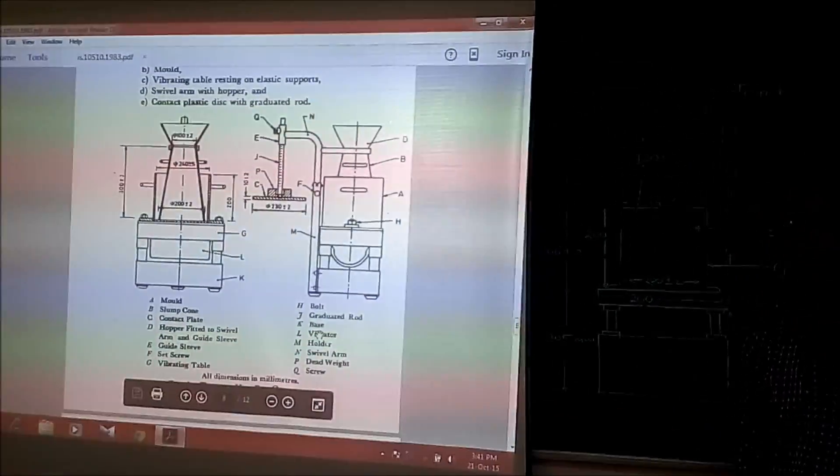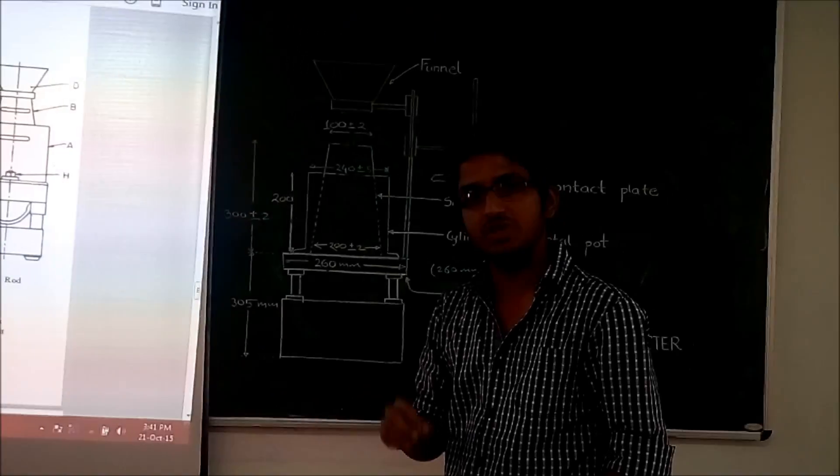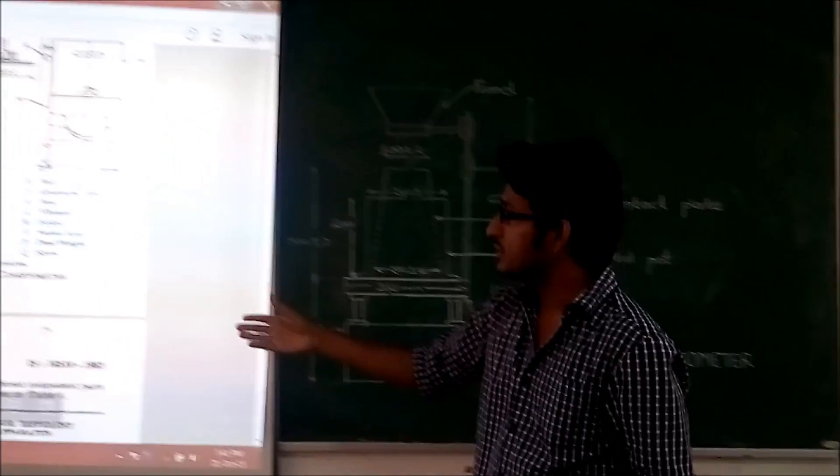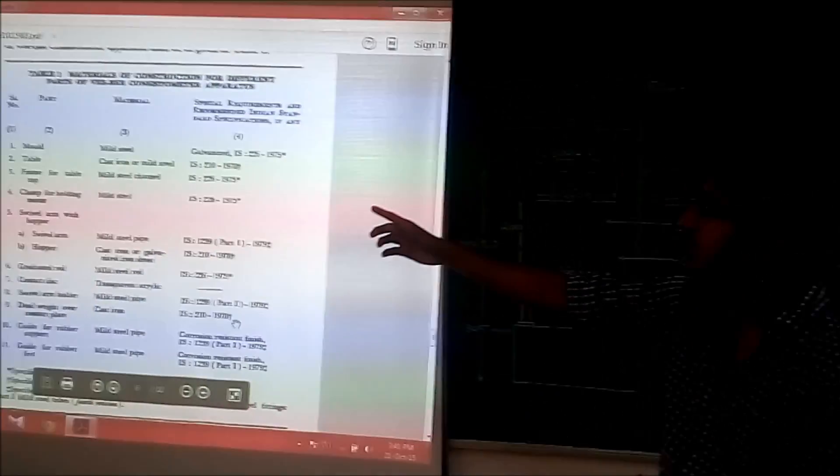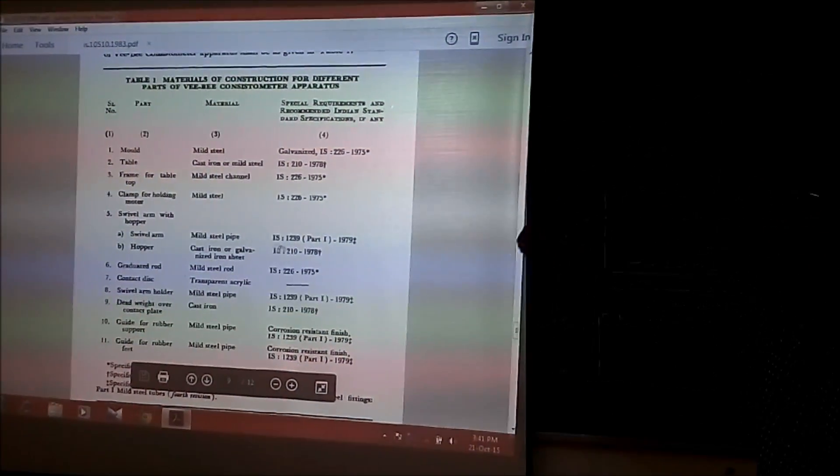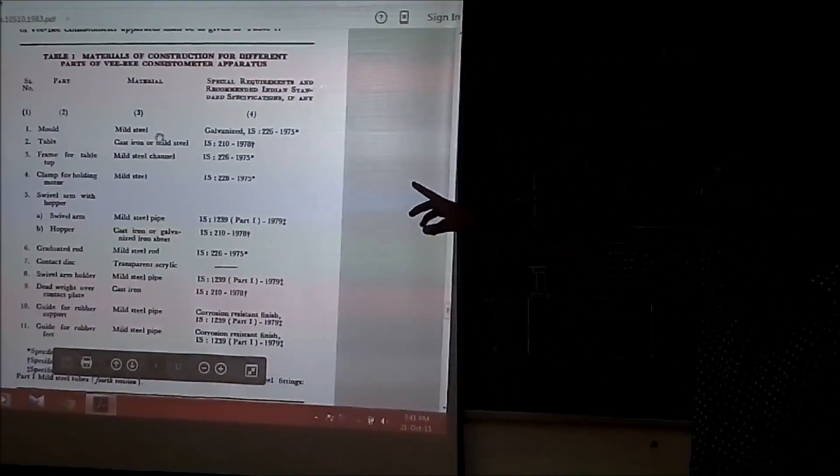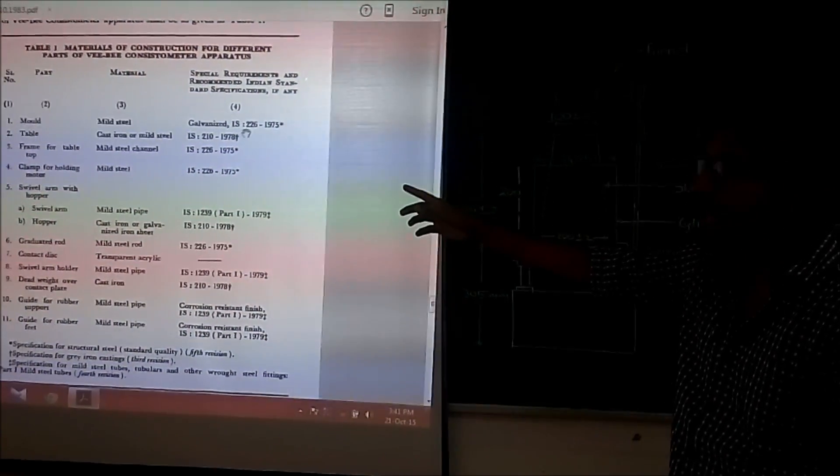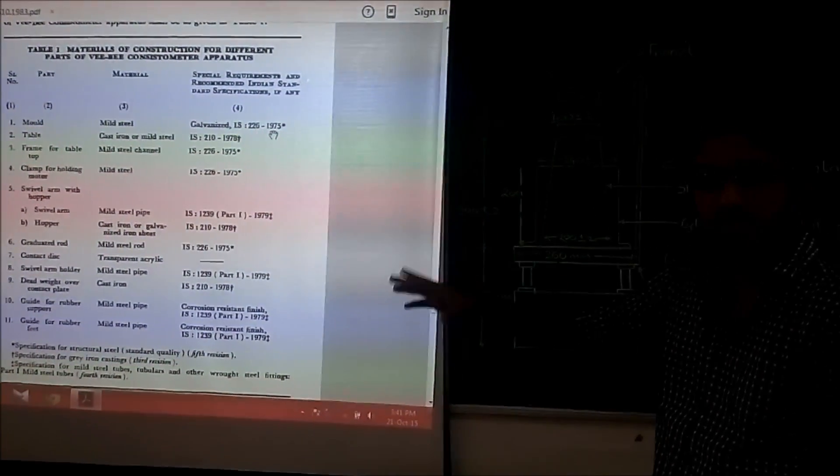Then this IS code also defines the material that is used for the construction of each and every component. For example, for the construction of mold, that is for serial number 1, we have to use the mild steel as a construction material. It should be galvanized and IS 226 should be incorporated.